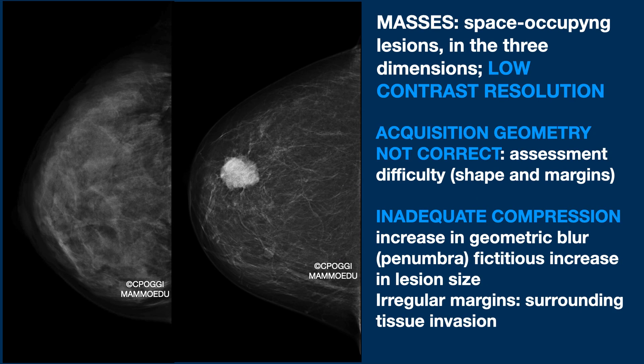Masses are easily found if the breast is fatty. In the case of a very dense breast, it is really difficult. Another important feature to mention is low contrast resolution, where a lesion of similar density to the rest of the tissue is still identifiable. Again, the mammographer's work is incredibly important. The acquisition geometry must be correct, otherwise it will be difficult to characterize the lesion.